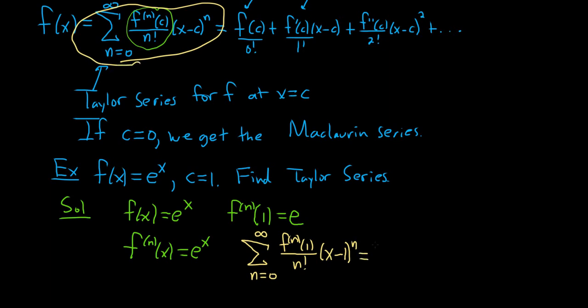So this is equal to the infinite sum as n runs from 0 to infinity. Well, the nth derivative of e to the x at 1 is just e. So we get e over n factorial x minus 1 to the n. And that's it. That would be the Taylor series for e to the x centered at c equal to 1.